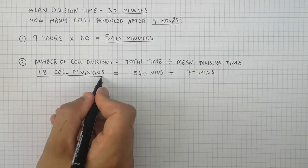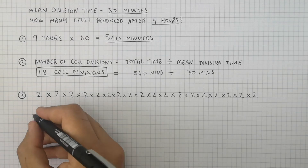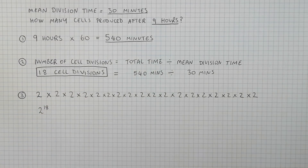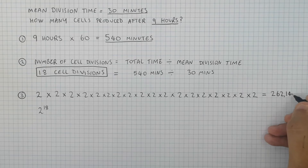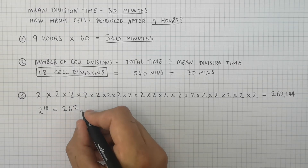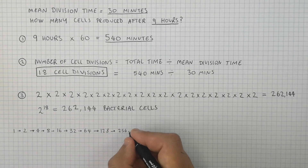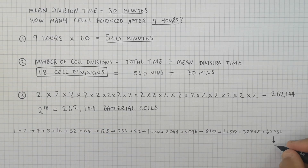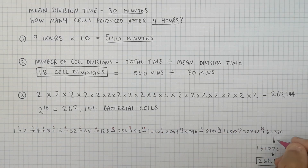You then multiply 2 by itself 18 times, as you can see here. This is the same as writing 2 to the power of 18. That gives you 262,144 cells produced after 9 hours. So 2 to the power of 18 equals 262,144 bacterial cells produced after 9 hours with a mean division time of 30 minutes. If you start with 1 bacterial cell and double it 18 times, you end up with 262,144. Each arrow represents a cell division with a mean division time of 30 minutes.